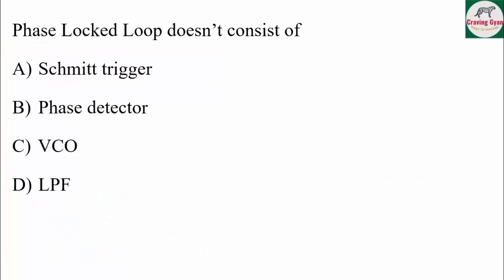The first question asked was: Phase lock loop does not consist of which component — smith trigger, phase detector, voltage controlled oscillator, or low pass filter?